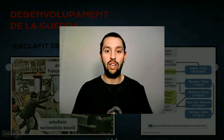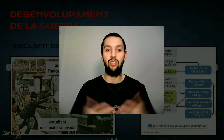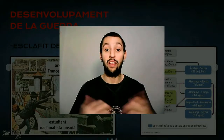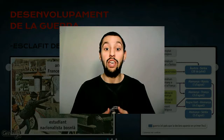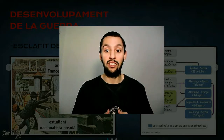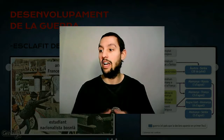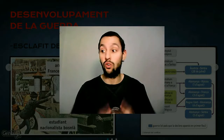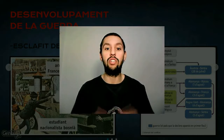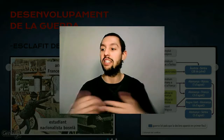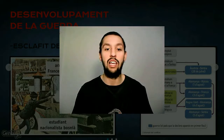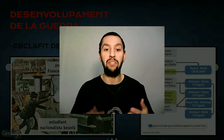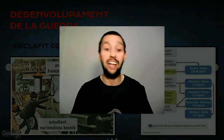Benvinguts a un nou videotutorial. Estem en Història Contemporània Universal de Quart de l'ESO, en el tema número 7 que fa referència a la Gran Guerra i la Revolució Russa. A continuació tractarem els inicis de la contesa i la seva evolució fins a l'armistici final.